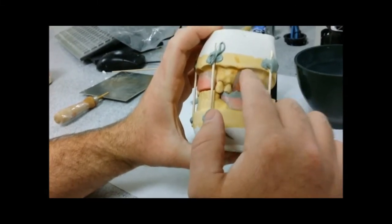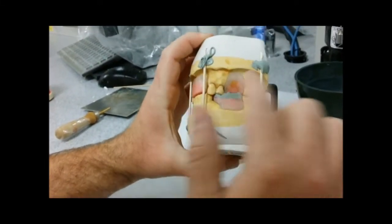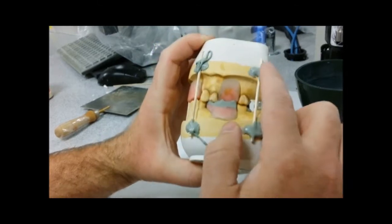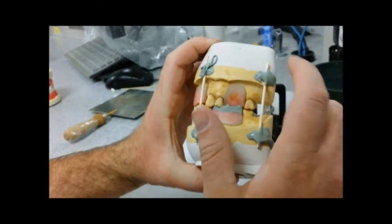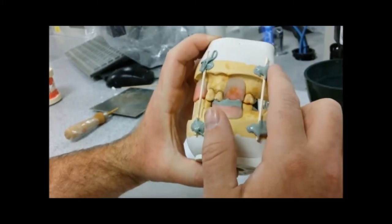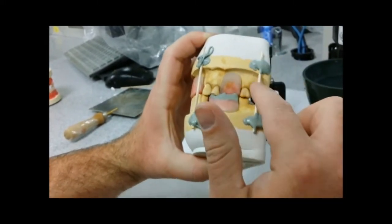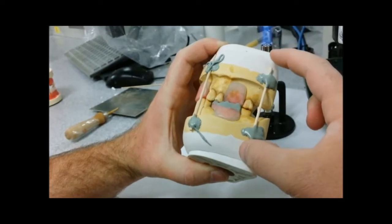You need to take your bite registration, your occlusion rim and you can either use a gray stick compound or sticky wax. Personally I prefer the gray stick compound. It's harder and I have a lot more problems with the sticky wax.